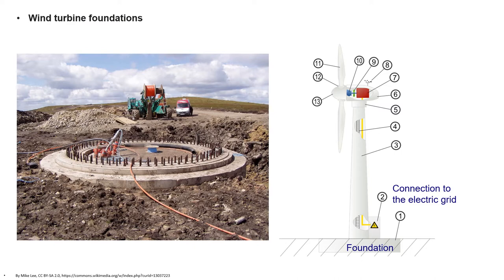All grid-connected wind turbines from the first one in 1939 until the development of variable speed grid-connected wind turbines during the 1970s were fixed speed wind turbines. As of 2003, nearly all grid-connected wind turbines are operated at exactly constant speed, also known as synchronous generators, or within a few percent of constant speed, also known as induction generators. As of 2011, many operational wind turbines used fixed speed induction generators, but most new grid-connected wind turbines are variable speed wind turbines.